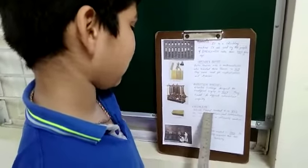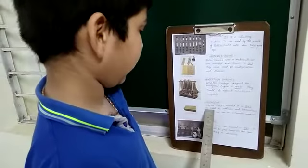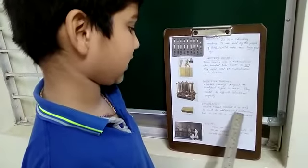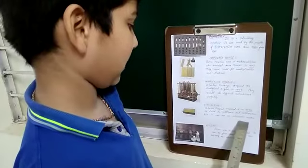Pascaline. Pascal invented it in 1642. It could do additions and subtractions, but it was not an automatic machine.